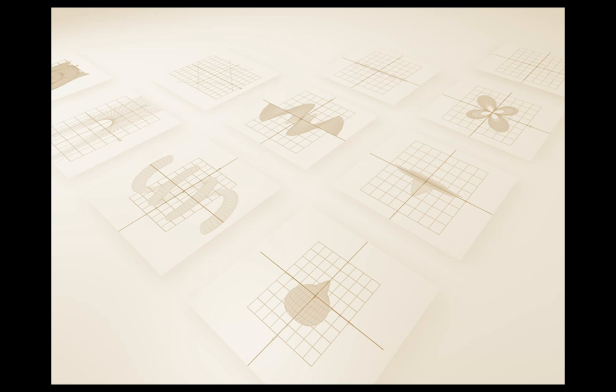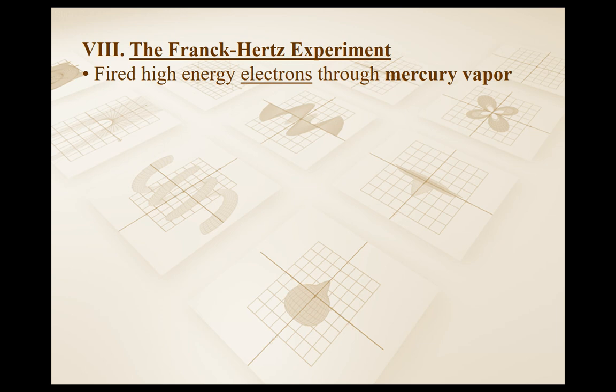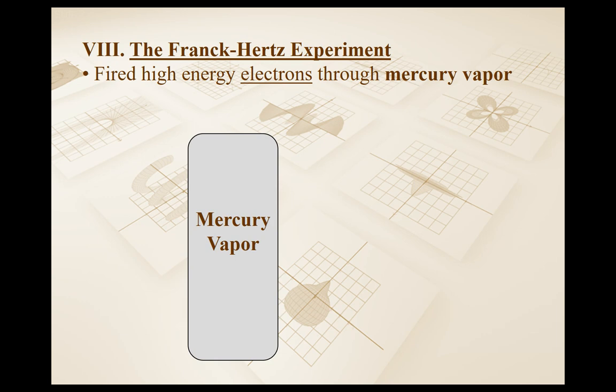So we're going to examine an experiment from Franck and Hertz, which are two separate scientists. What they did is they fired high-energy electrons through mercury vapor. Here's a container of mercury vapor, and we're going to fire electrons through it, then observe the energy of the electrons after they leave.